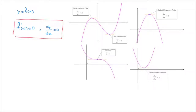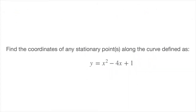Knowing how to calculate the coordinates of stationary points is essential in our studies of calculus. So let's go right ahead and learn the method by working through a couple of examples. The first example: we're asked to find the coordinates of any stationary points along the curve defined as y equals x squared minus 4x plus 1.